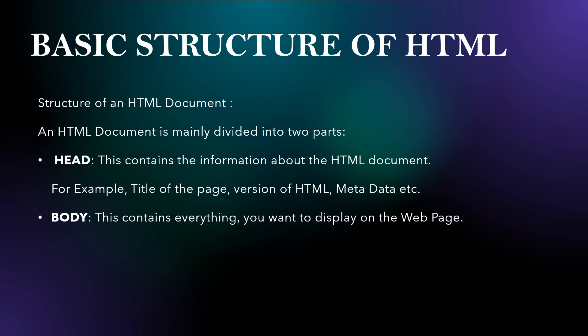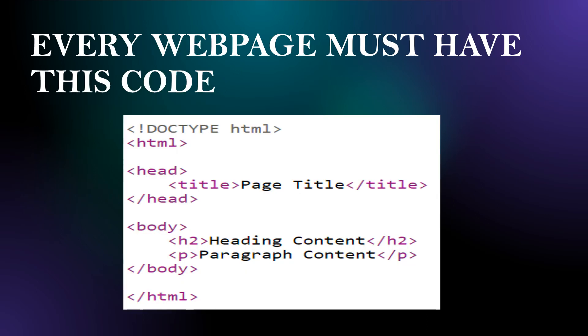Now let us see what is the basic structure of HTML. An HTML document is mainly divided into two parts: head and body. Head contains the main information about the HTML document — for example, it contains the title of the page, version of HTML, metadata, etc. Body contains everything which you want to display on the web page. It contains the HTML, head, body and doctype HTML tags.